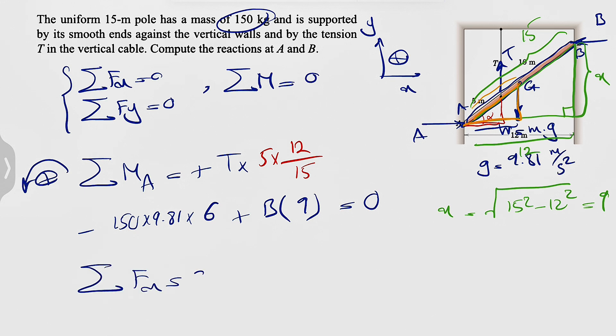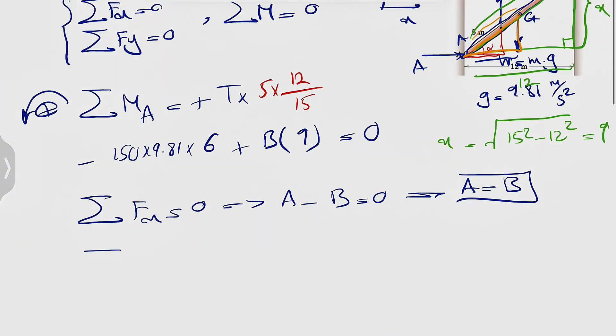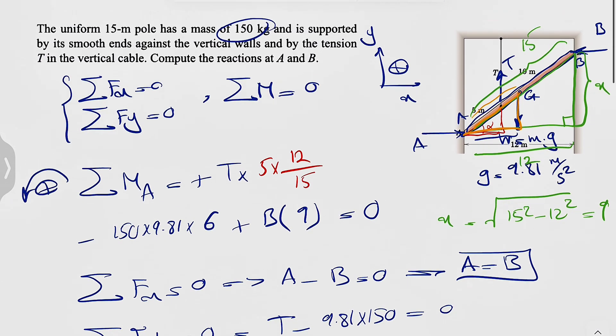Our Fx, we have A minus B equals 0, so A is actually equal to B. And if we just do sum of all forces in Y equals 0, we're going to have the T minus the weight, 9.81 times 150, equals 0. And we can find T in here.